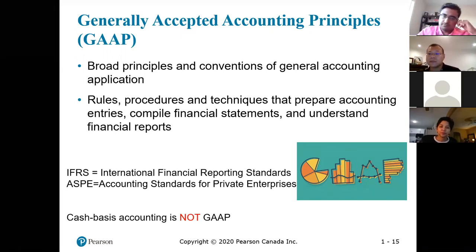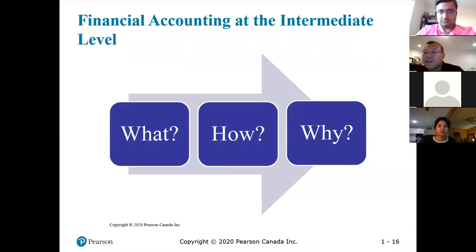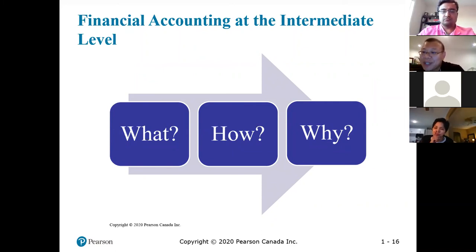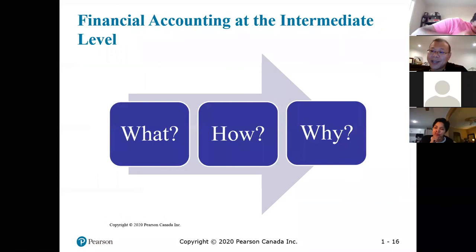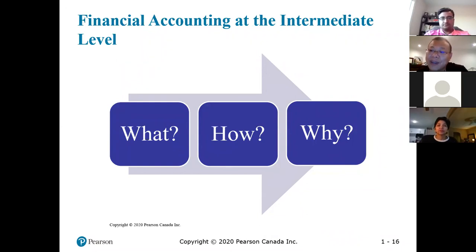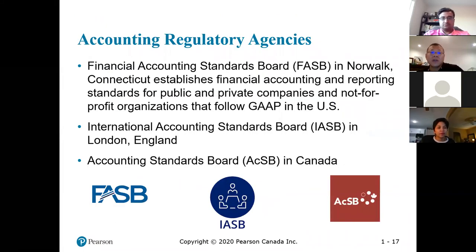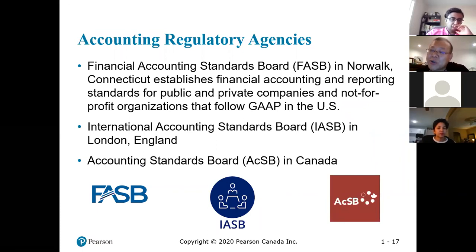At the intermediate level — from the 3100 level — we are trying to understand why we do things, asking deeper questions. As we go through these chapters, you'll see how chapters one, two, and three — this theoretical knowledge — will help you understand why we do certain things a certain way for chapters four to ten. Now let's talk about accounting regulatory agencies and understand a little about the institutional environment.